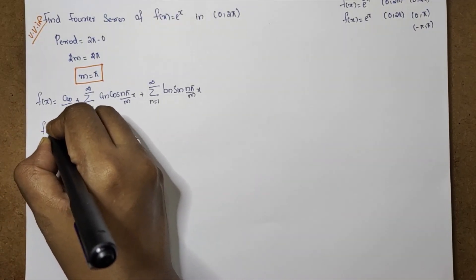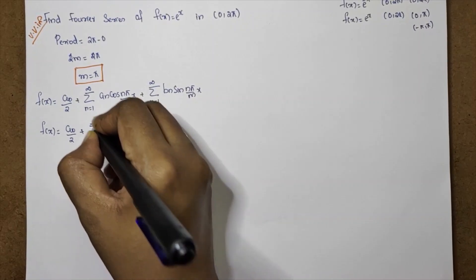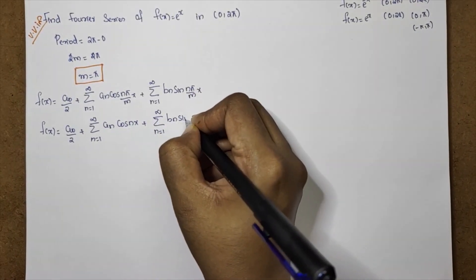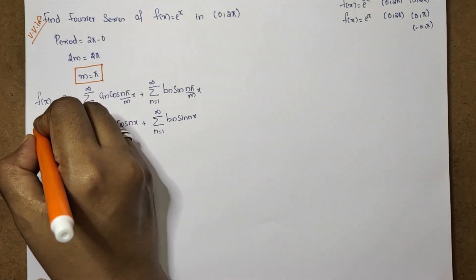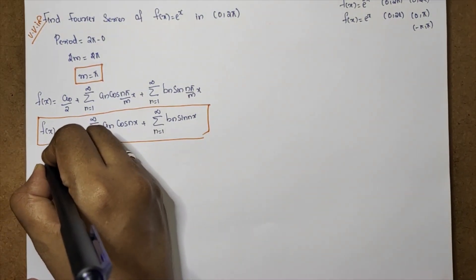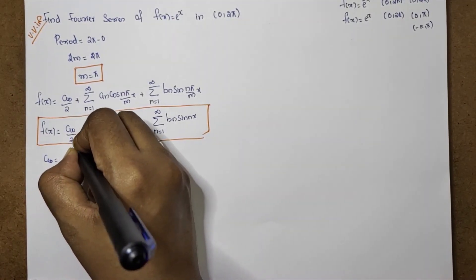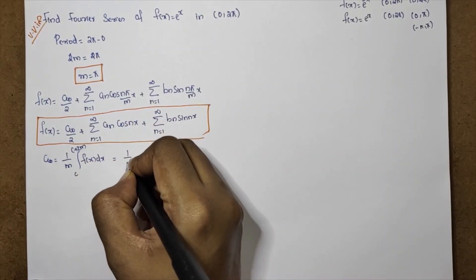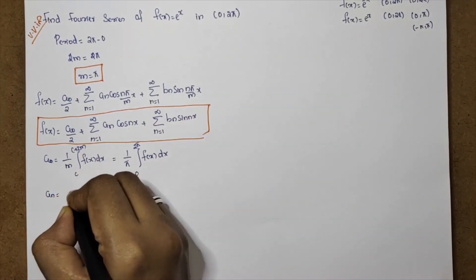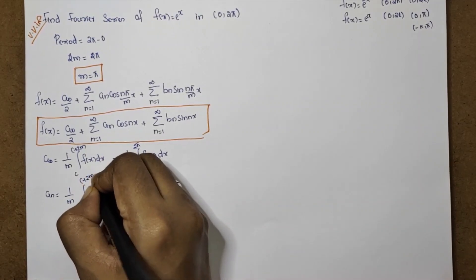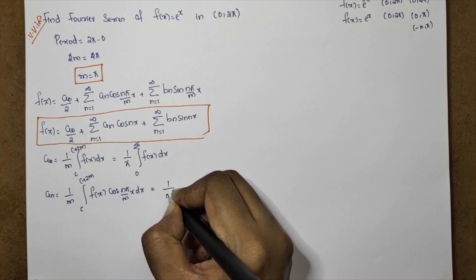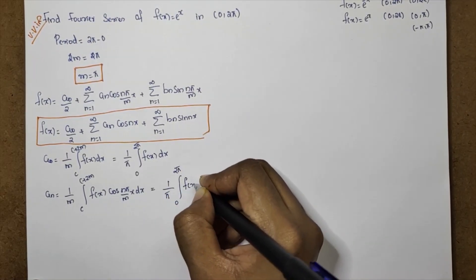Since L equals π, the formula simplifies to f(x) equal to a₀ by 2 plus summation n equal to 1 to infinity aₙ cos(nx) plus summation n equal to 1 to infinity bₙ sin(nx). The coefficient a₀ is given by 1 by π into integral from 0 to 2π of f(x) dx.